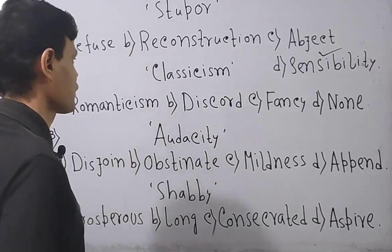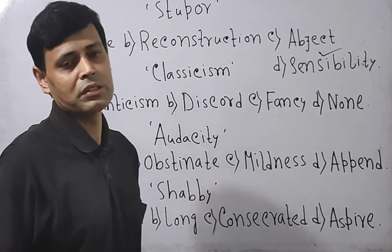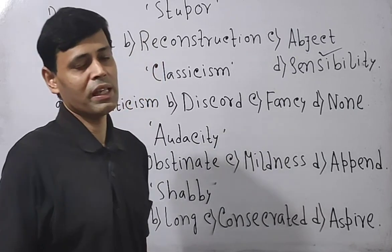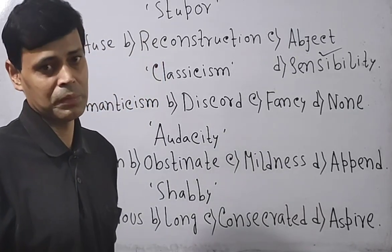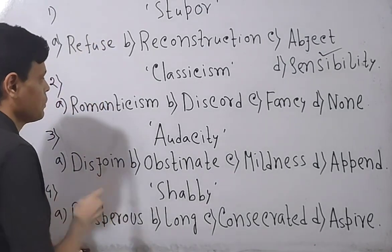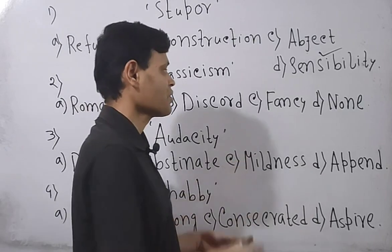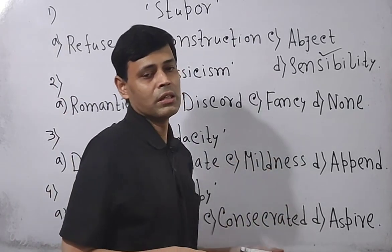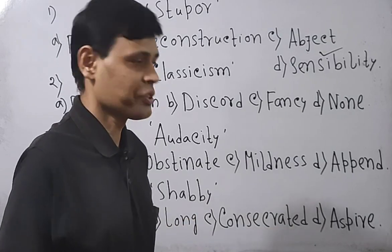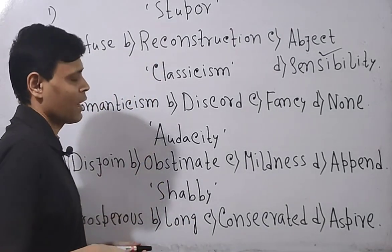Next word: 'classicism.' In English literature, different periods are categorized. One of those ages is classicism, and another is romanticism. Discord means disagreement. Fancy means living in a utopian world or in the world of imagination. Now, classicism has some basic features.